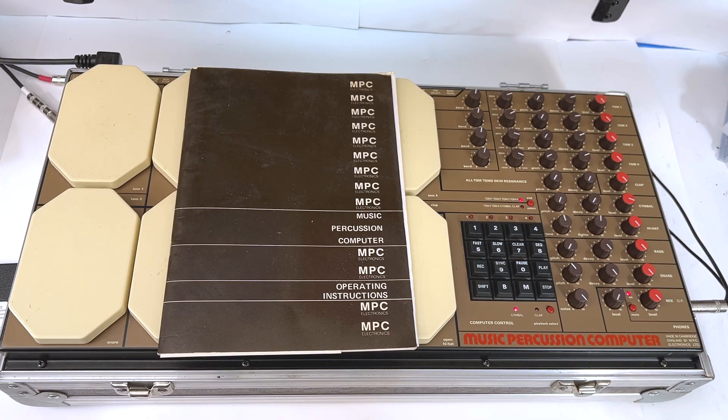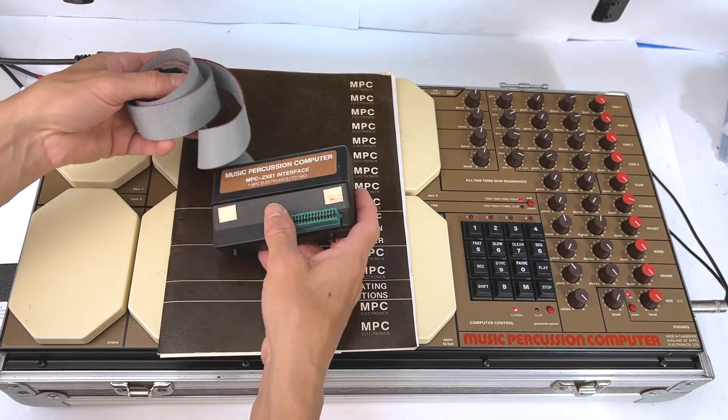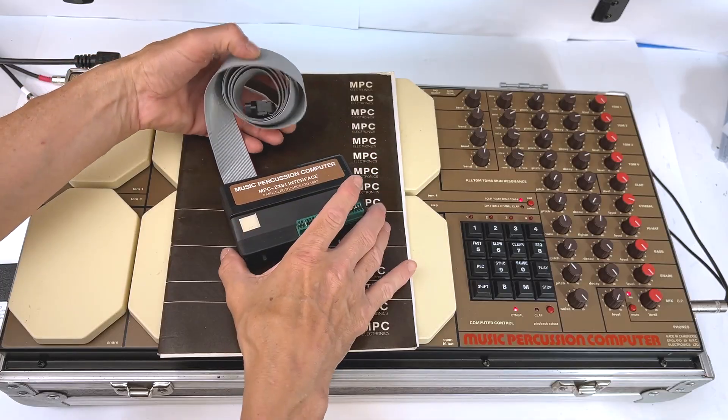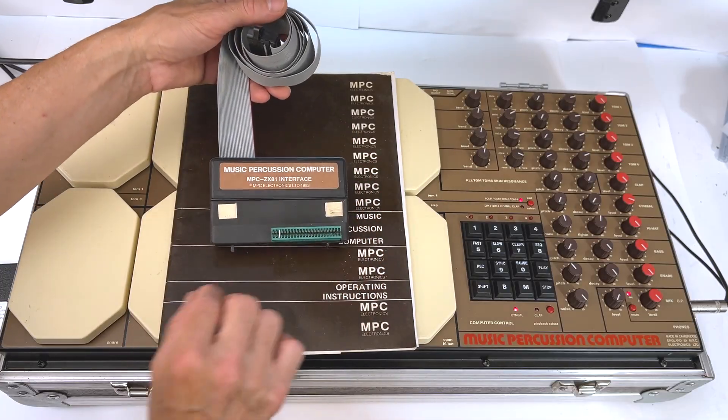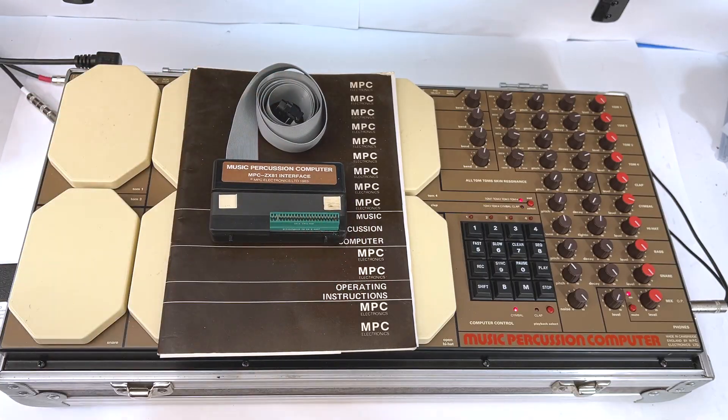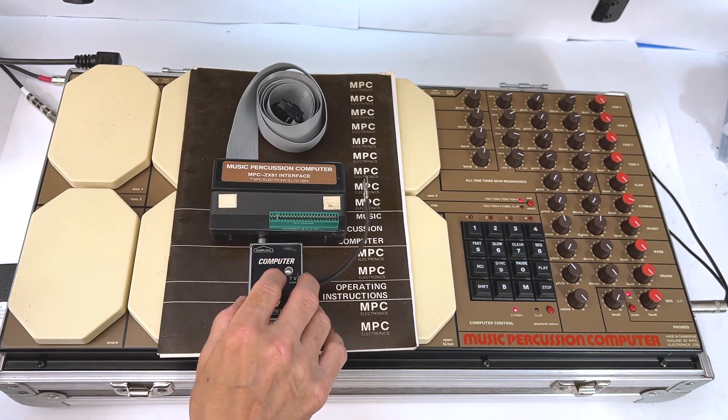There was a computer interface for the Sinclair ZX-81, or the US version was like the Timex 1000—basically the same thing. So it had this computer interface. It has the VHF for the interface for the monitor.